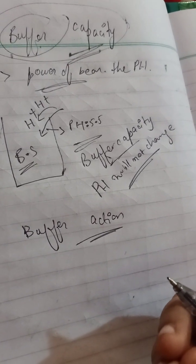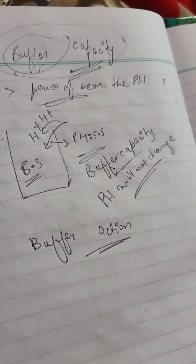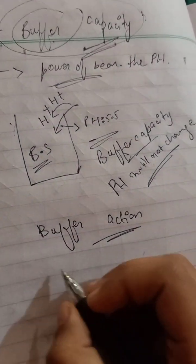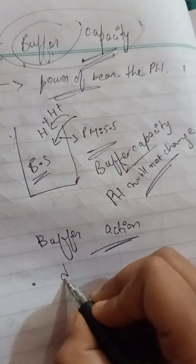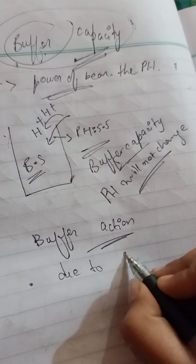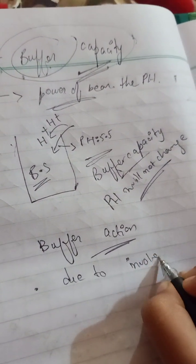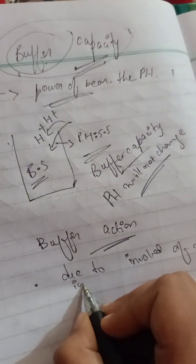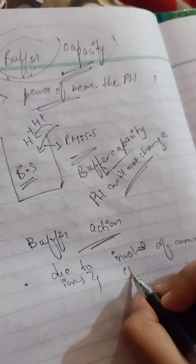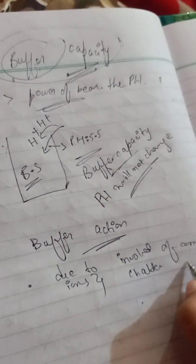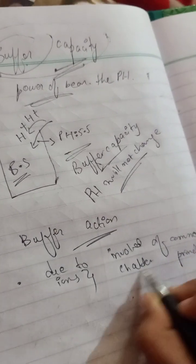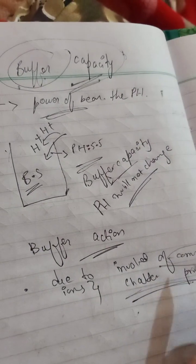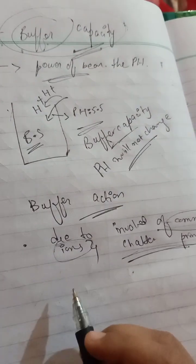Buffer action refers to the action by which pH is maintained — what is happening behind the scenes. This is due to the involvement of the common ion principle, which I will explain in detail in the next chapter. In this video, I will briefly discuss the common ion effect.